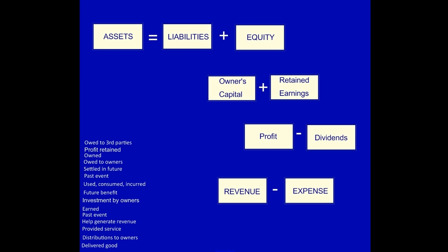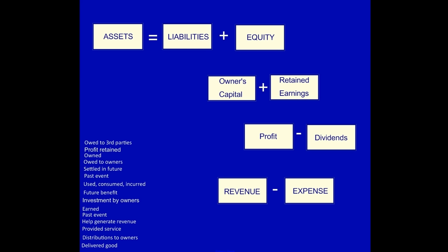Let's just make the interconnection between these items very clear. Equity is tied into owner's capital and retained earnings. Retained earnings is made up of profit less dividends. And profit is made up of revenue minus expenses. So we've got the equation.